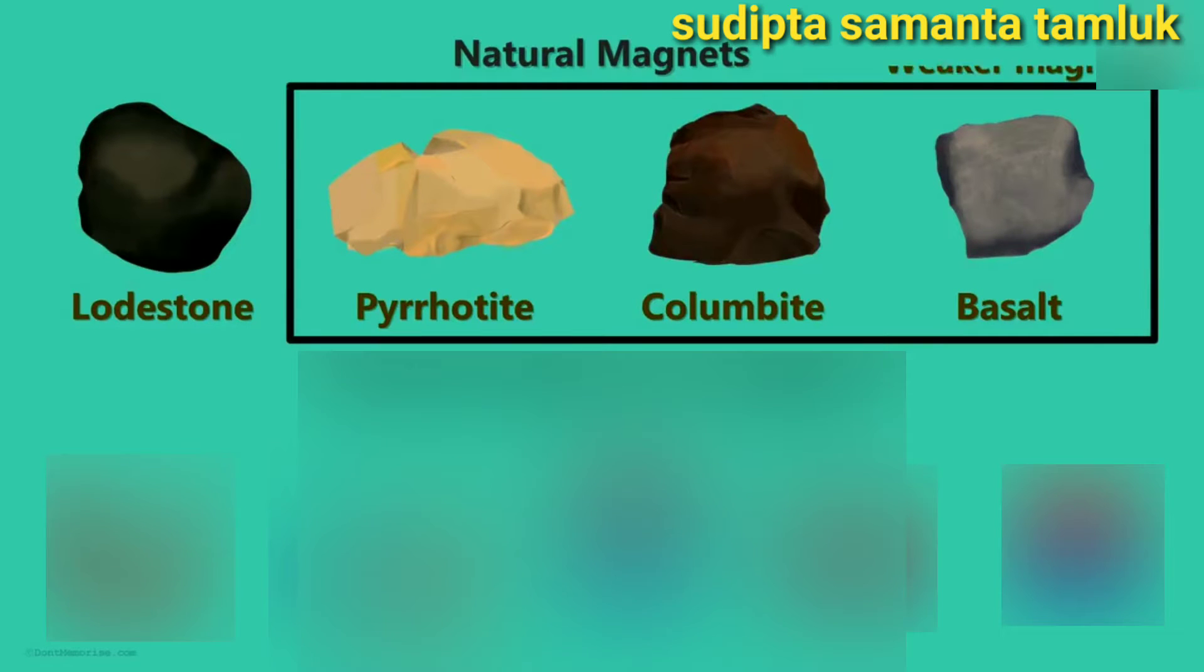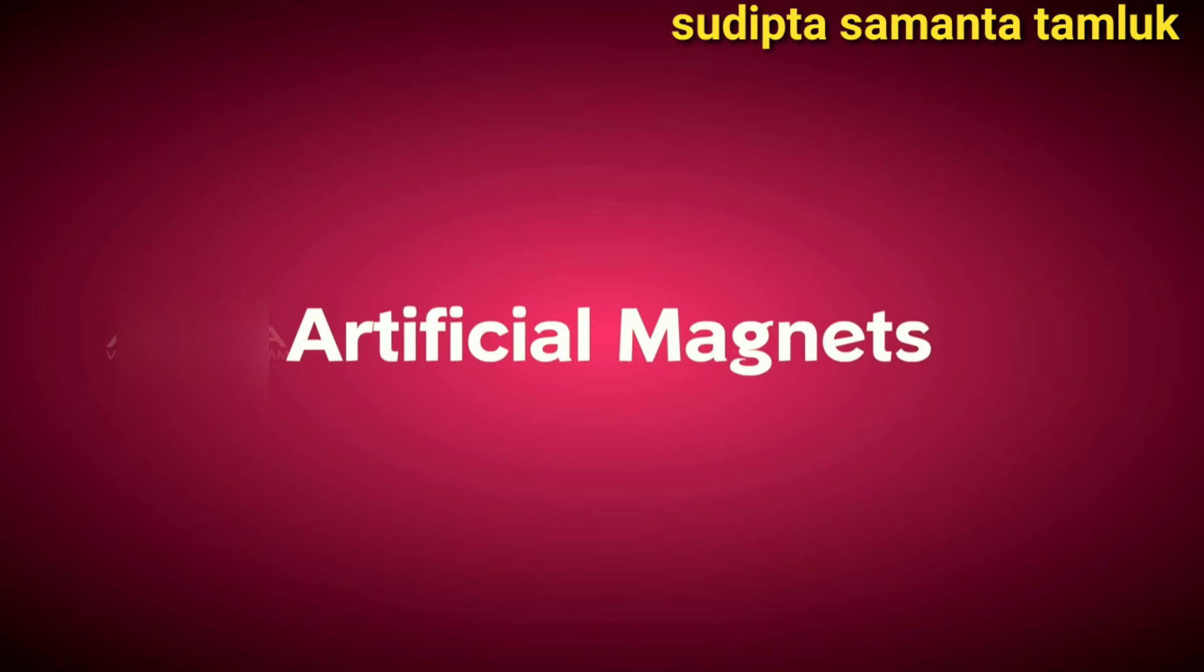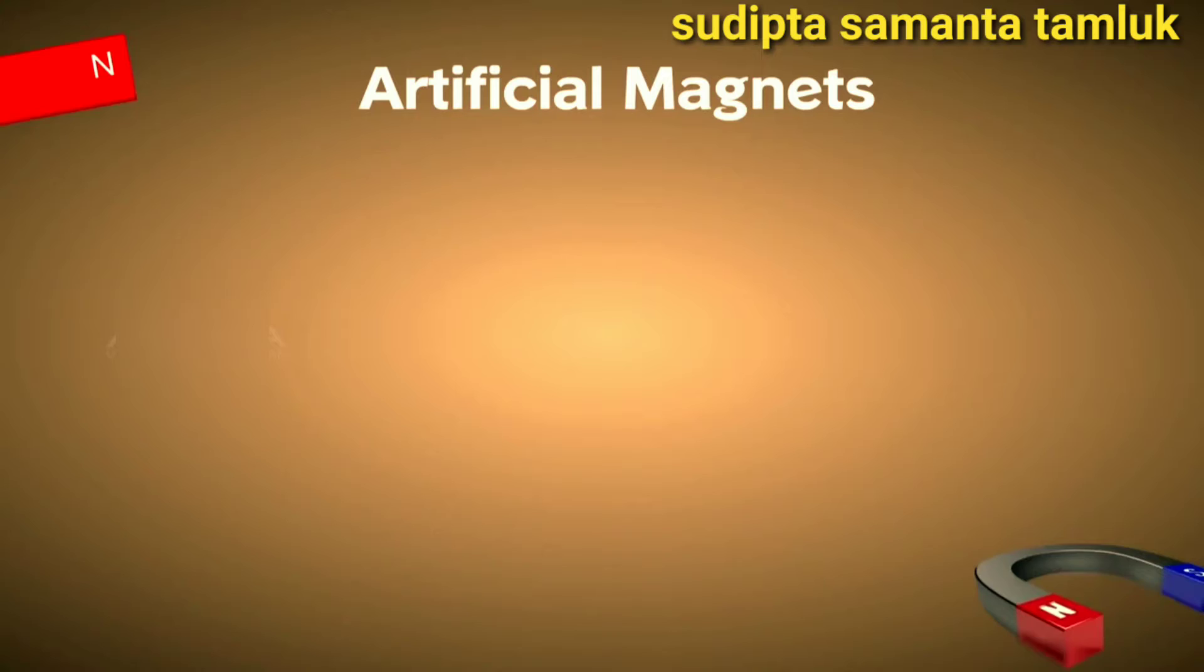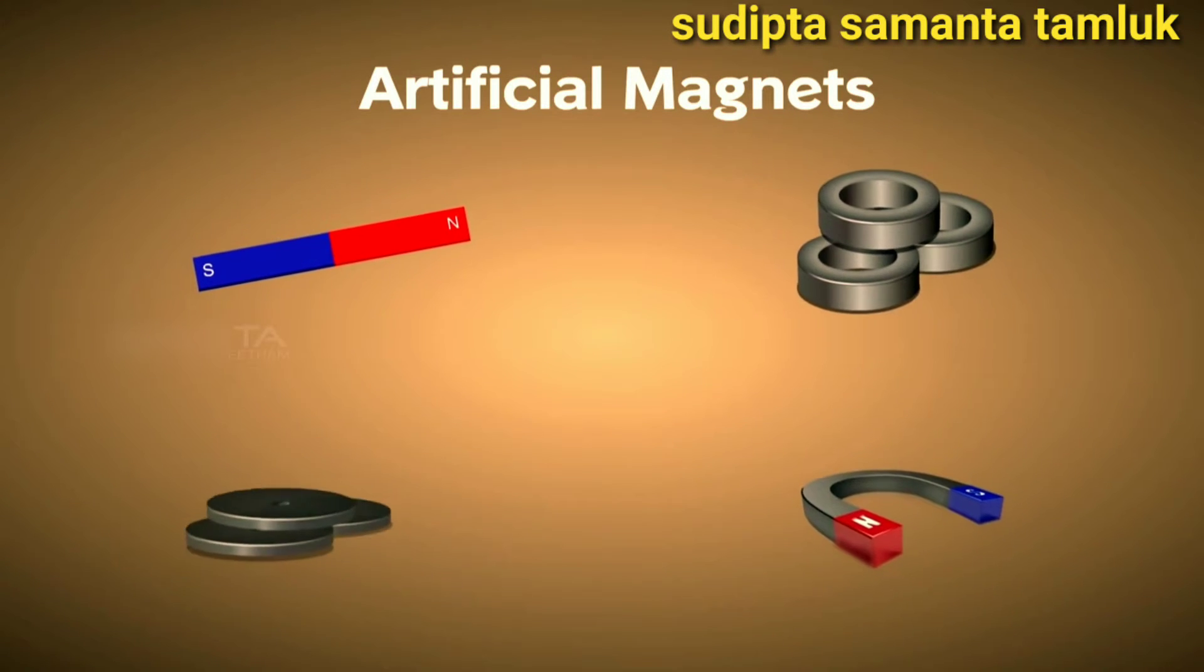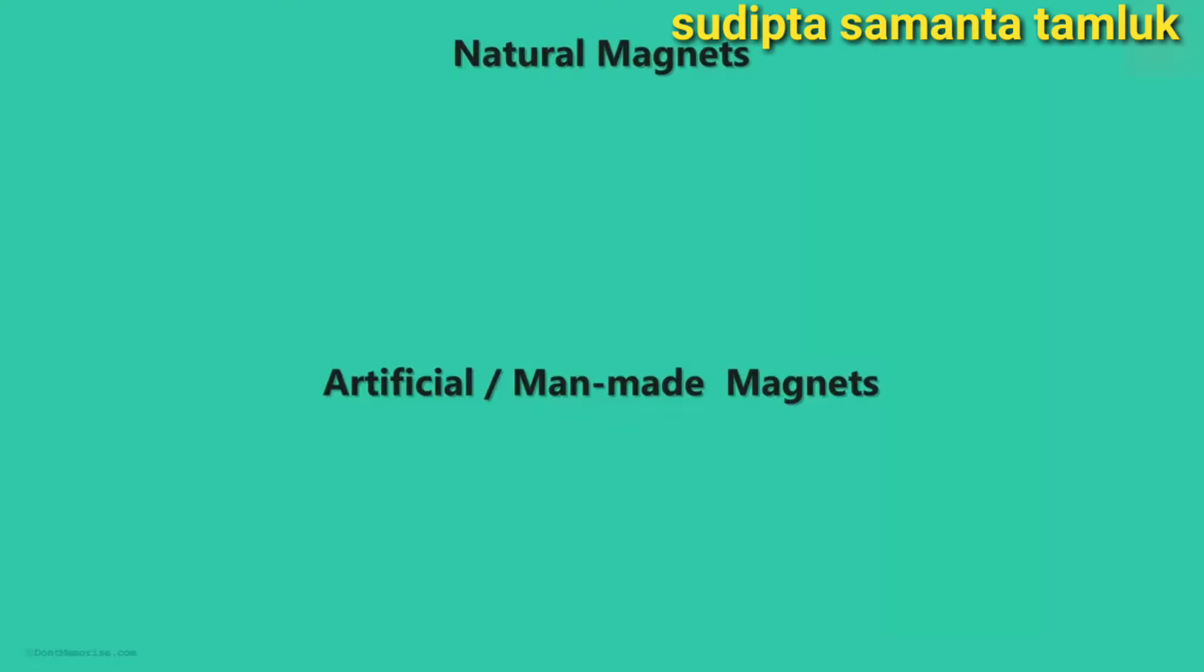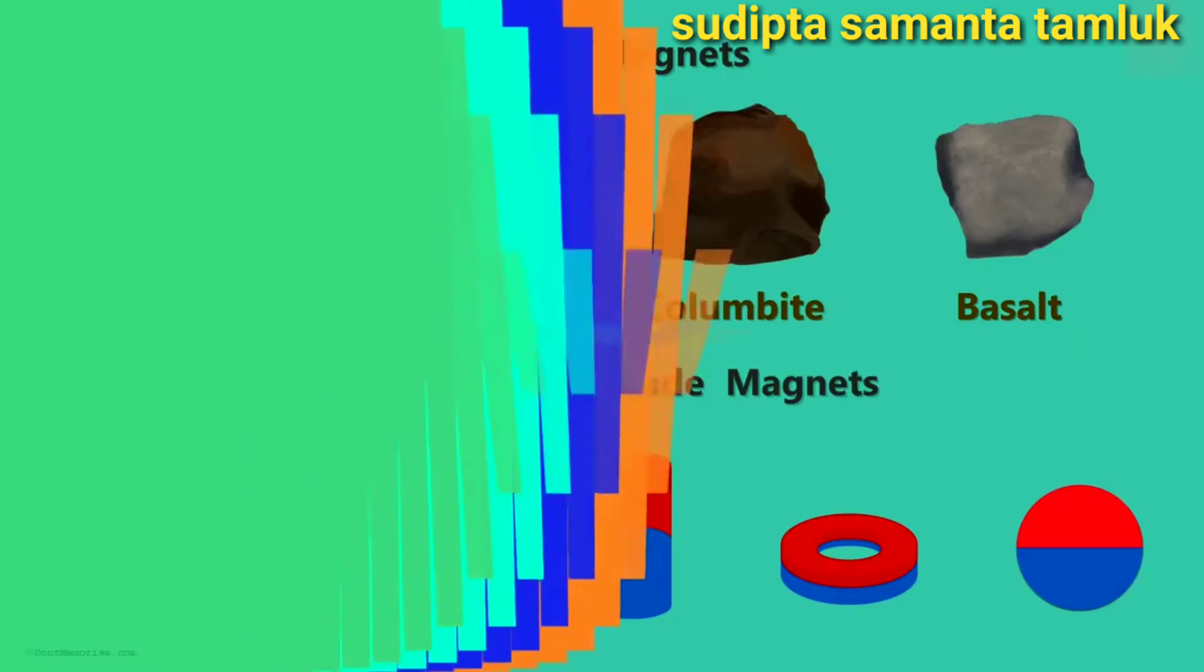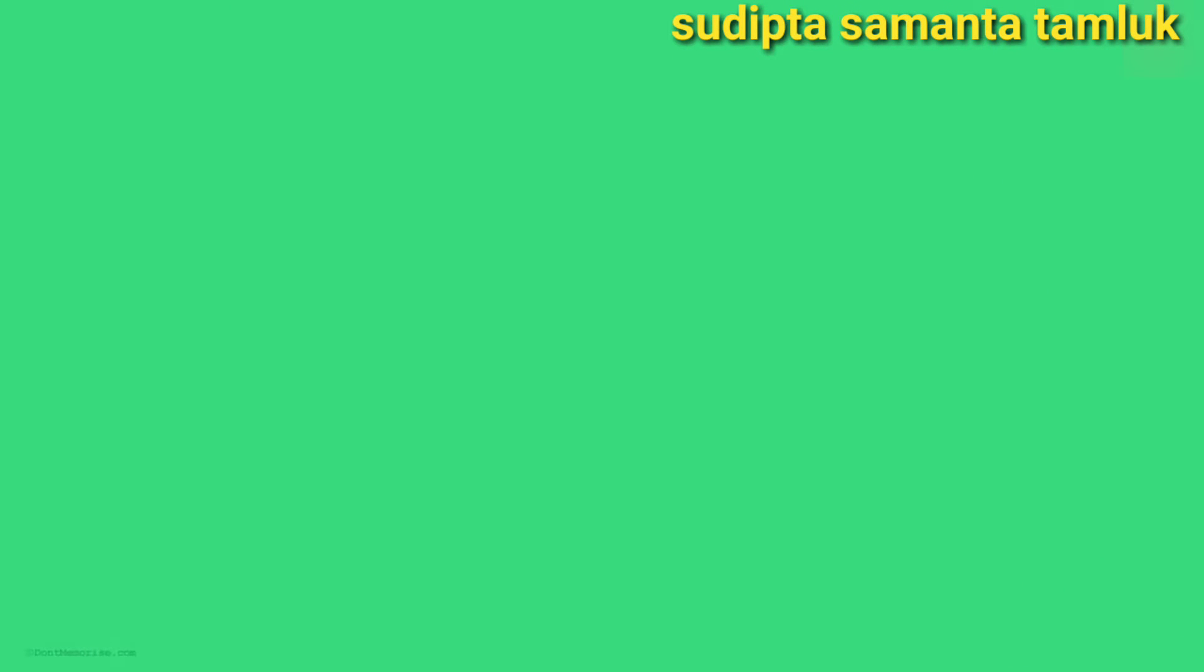But these magnets are much weaker than loadstone. Man-made magnets are called artificial magnets. Depending upon the applications, artificial magnets are of different shapes and sizes. For example, bar magnet, circular magnet, button type magnet and horseshoe magnet. Almost all the magnets that you will ever come across are artificial. The magnets are also classified into two main categories, permanent and temporary.